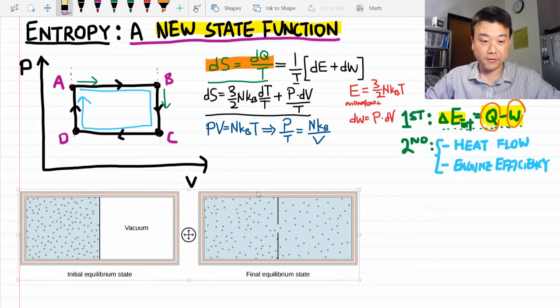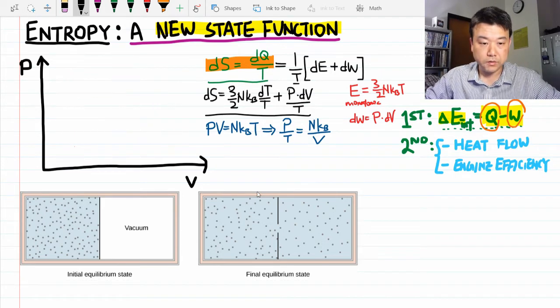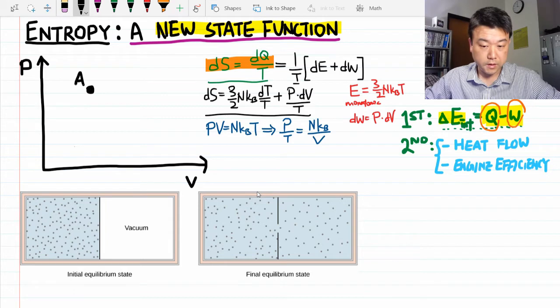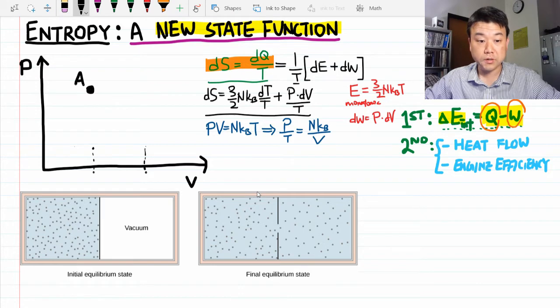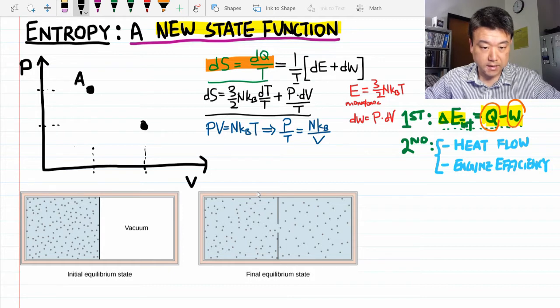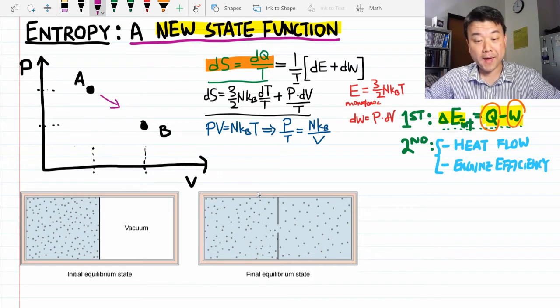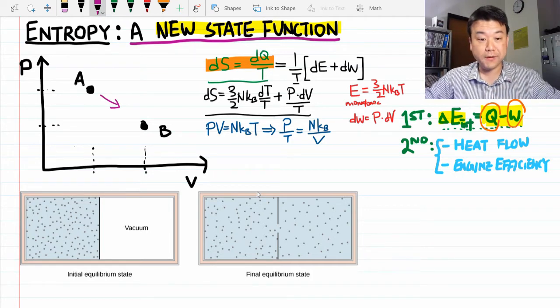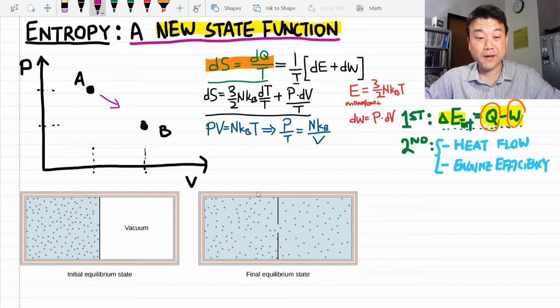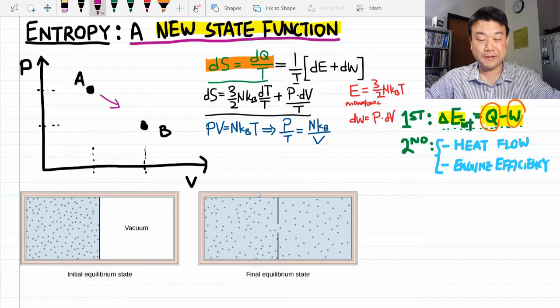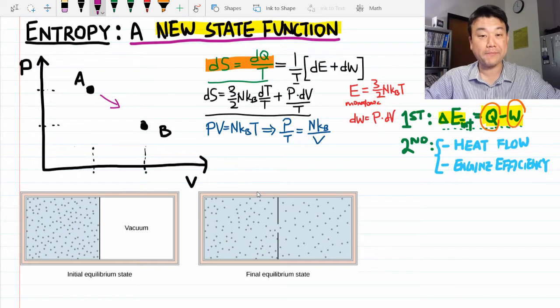So let me draw the PV diagram of this free expansion here. You start out at some state, some pressure and volume. After the partition is removed, the volume doubles. And as we discussed before, the temperature doesn't change. So that must mean pressure halves. So the state of the gas ends up somewhere around here. So that's the change that takes place. I'm not going to draw a path because this is a non-quasi-static process. And drawing a path on the PV diagram implies that there's a path to be drawn. Here there's no path. You just start at A. Some moment later, you're at B.